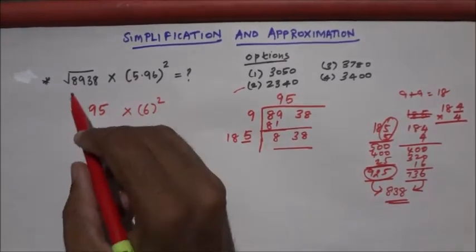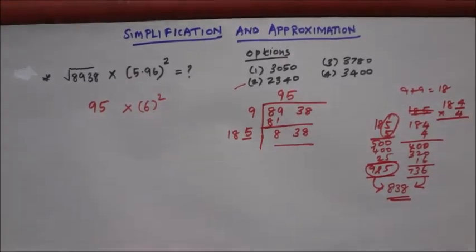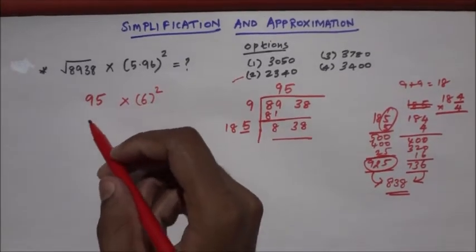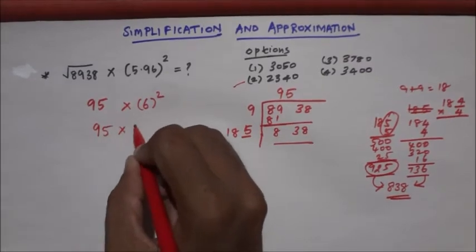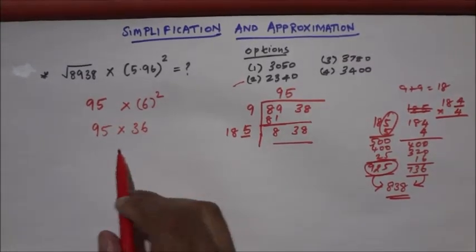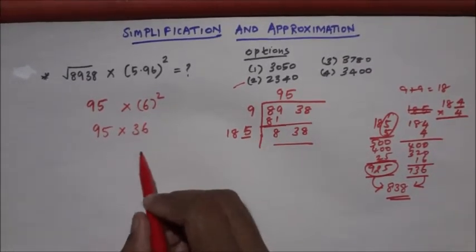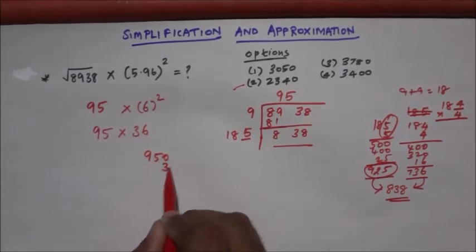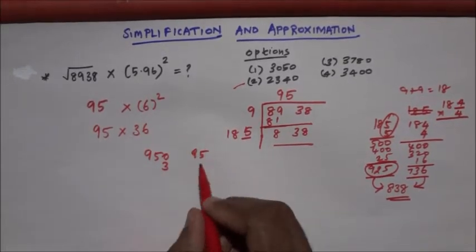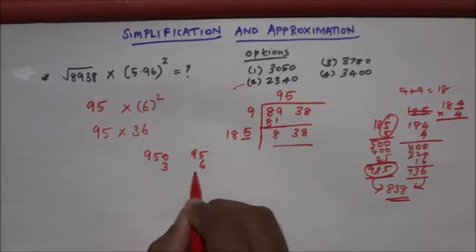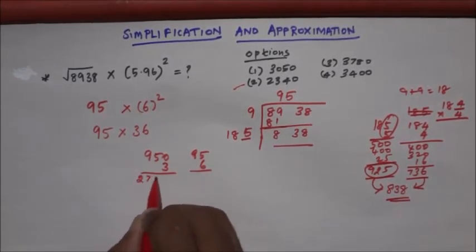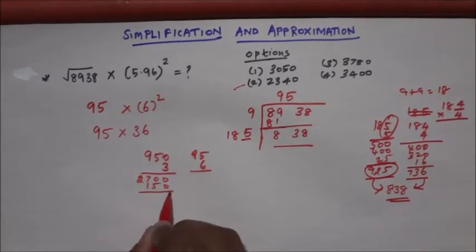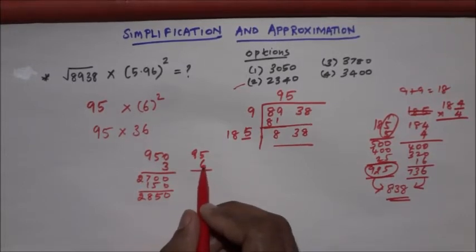Then you can put it 666 and 95 times 36. This is the value of 25. This method will multiply by 950, 10% into 3, 95% into 1% into 6.